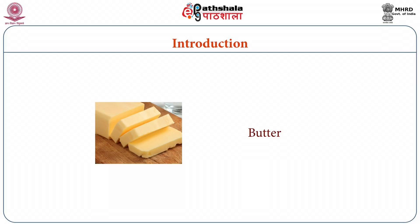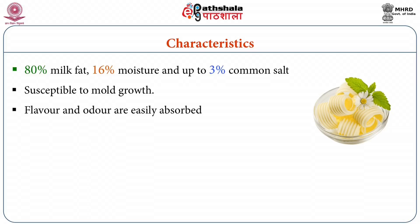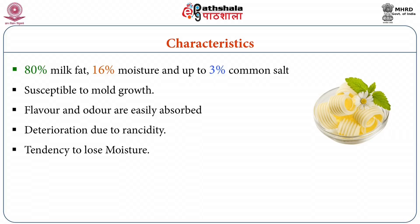First of all we will discuss the packaging of butter. Looking at the characteristics of butter, it consists of 80 percent milk fat, 16 percent moisture, and around 3 percent common salt. Because of high moisture content, butter is susceptible to mould growth and lipolytic rancidity. Flavour and colour are easily absorbed by butter from its environment, which is another major problem. Deterioration may take place due to rancidity, which gives rancid flavour in the final product. Butter also has a tendency to lose moisture, which causes surface hardening.